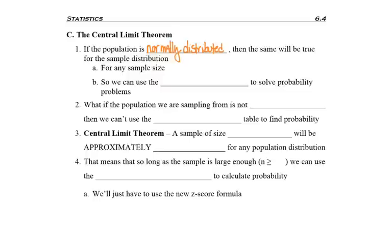That means that for any size sample that you take from a normally distributed population, your sample is also normally distributed. And this means that we can use the standard normal table to solve probability questions.